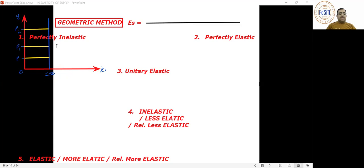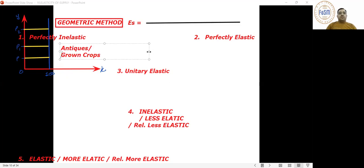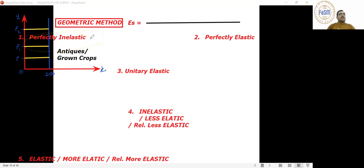So perfectly inelastic is applicable in case of antiques, grown crops — meaning a harvested crop already in the market. Whatever its price, the quantity cannot be changed. This is why elasticity here is perfectly inelastic. We encounter this concept three times: in the very short period, in the percentage method, and now in the geometric method.